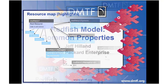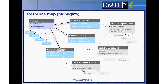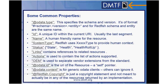Going over the resource map, the common collections and instances — you will see not so much the collections, although there are some common properties in those as well. In fact, all of our collections are pretty much the same with a few changes. Instead, you'll see a lot of the instances like systems, chassis, managers, sessions, and the rest all have a common set of properties. Here is not an exhaustive list, but certainly ones you'll see.